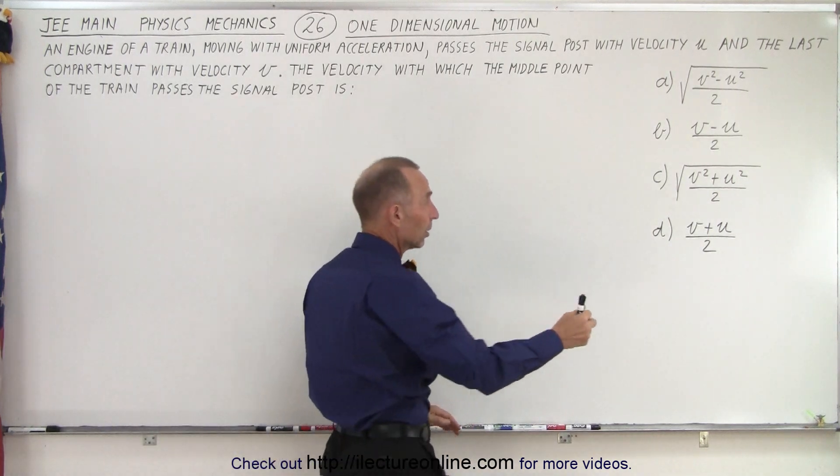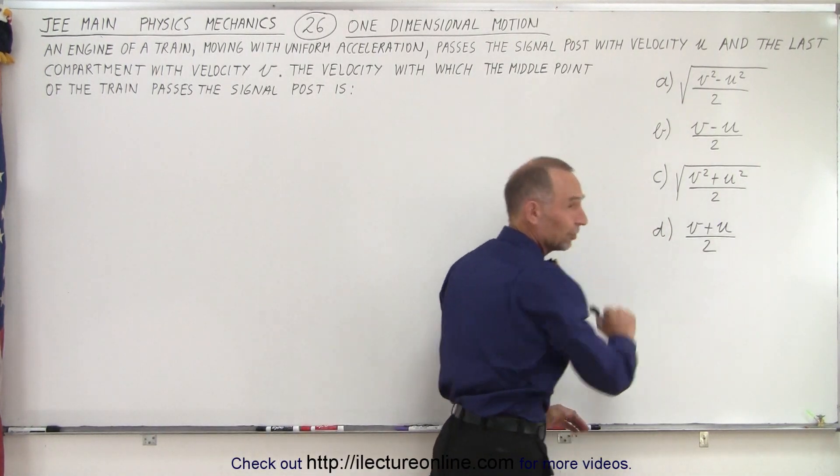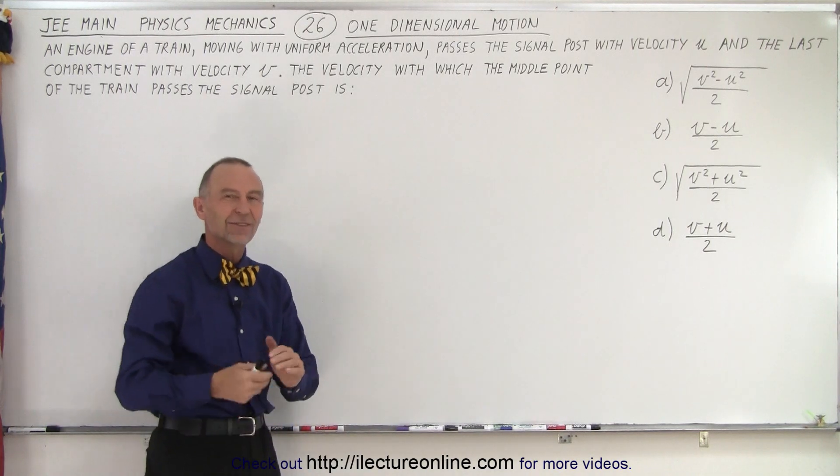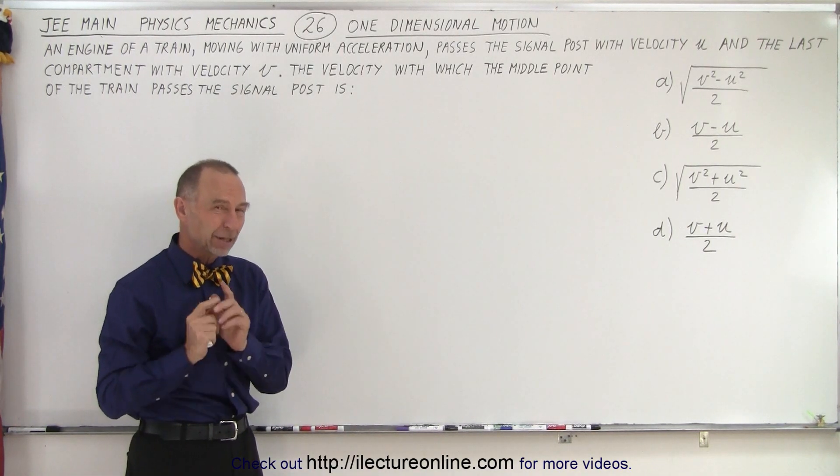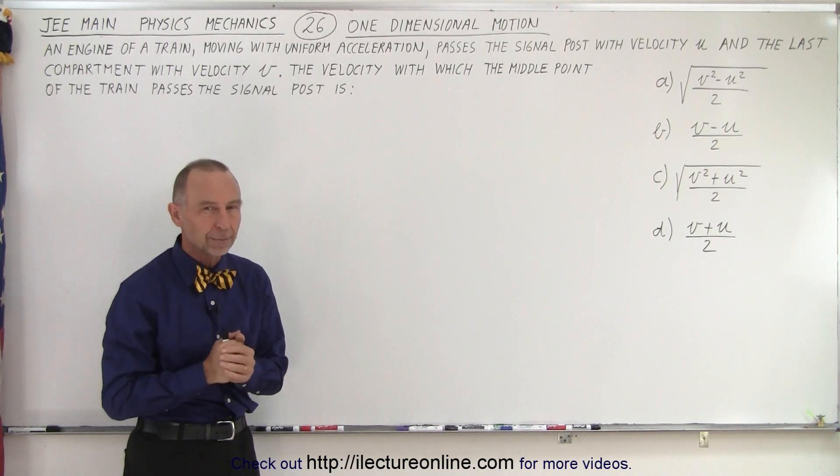So the average would simply be the sum of the two divided by two, answer d. But it turns out that's not the correct answer because it's not a linear thing. There's uniform acceleration, and because of that, we can't use that technique to solve the problem.